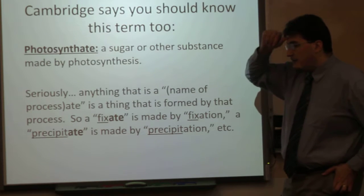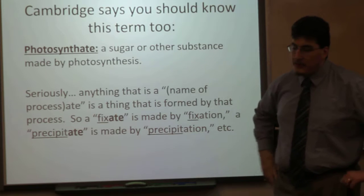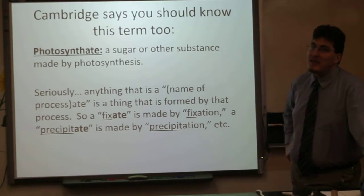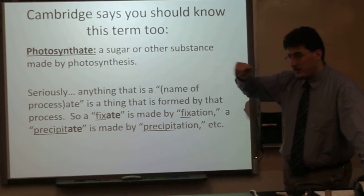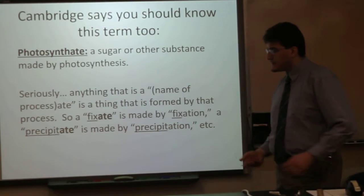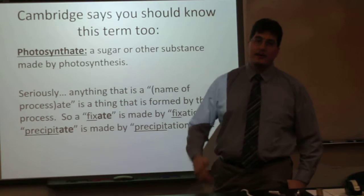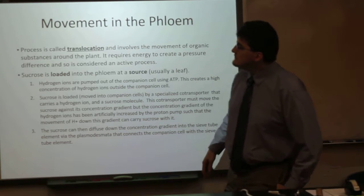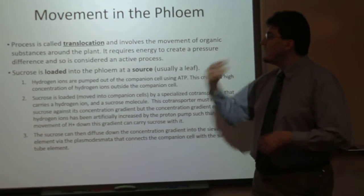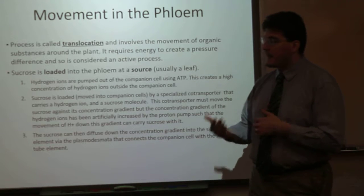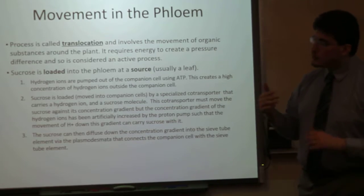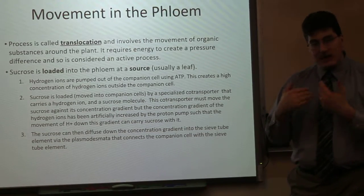A photosynthate is a sugar or other substance that is made by photosynthesis. Anything that is an '-ate' is formed by the process of something-or-other. A fixate is made by the process of fixation; a precipitate is made by the process of precipitation. Now, movement in the phloem is the process of translocation — it involves the movement of organic substances around the plant. That requires energy; it is an energy-intensive process to create a pressure differential, making it an active process.